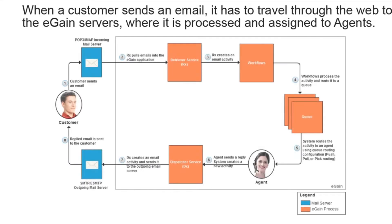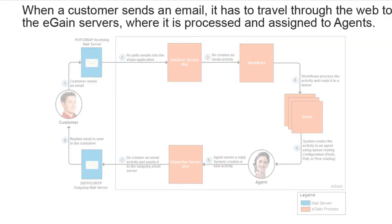When a customer sends an email to the company's email alias, it has to travel to the eGain servers, where it is processed through a workflow and assigned to a queue, and then assigned to agents. Here's how it all works.